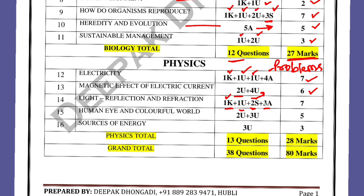Light — Reflection and Refraction: one objective knowledge-based question, one understanding question, two skill-based (ray diagrams), and three application-based (numerical problems from the light chapter) — total seven marks. The Human Eye and the Colourful World: two understanding-level questions and three marks understanding — eye defects will be asked — total five marks. Sources of Energy: three mark question including the biogas diagram, which is very important. Total from physics: 13 questions and 28 marks. Grand total: 38 questions and 80 marks.